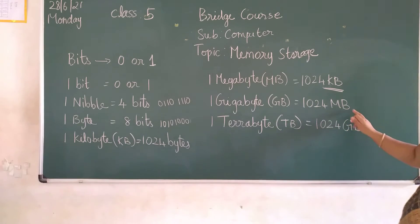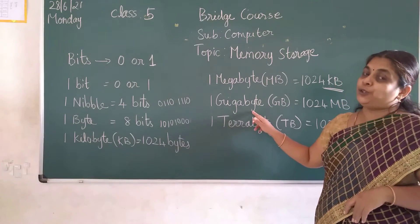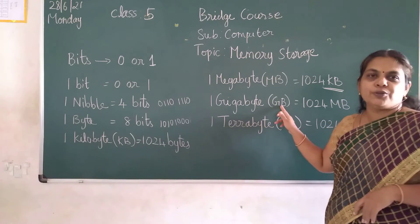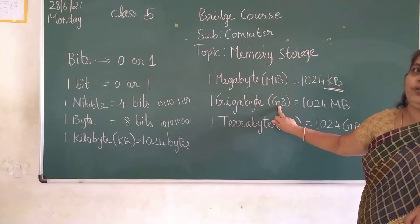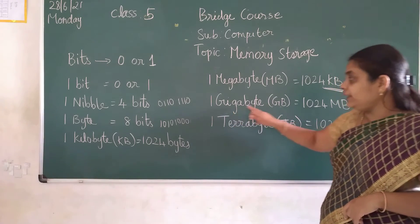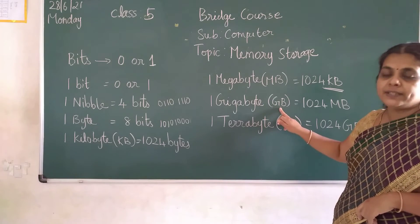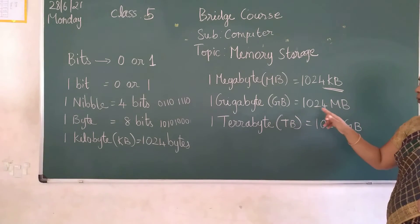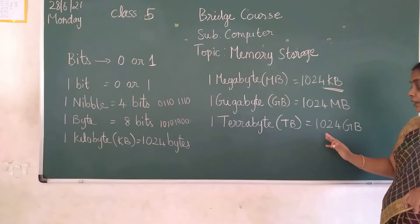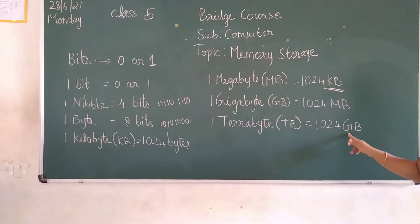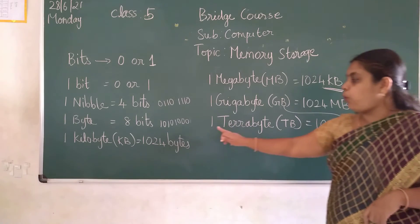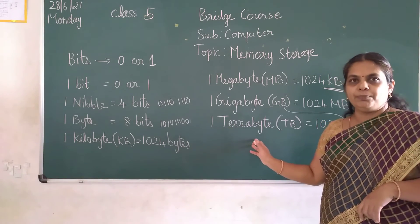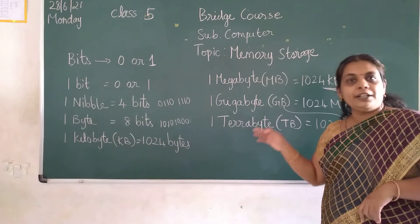1024 MB is known as 1 gigabyte. The short form is GB. You would have observed with your parents how much GB memory storage is there — 64 GB, 32 GB, 128 GB — like that. So 1 gigabyte short form is GB, it is equal to 1024 MB. The next one: 1024 GB is 1 terabyte. Nowadays in latest mobiles and computers, you get a memory storage of 1 terabyte children.